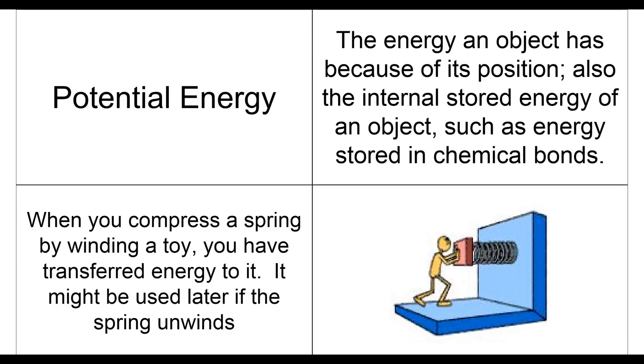Now, our next word is going to be potential energy. So I mentioned there's two ways in which we can categorize energy, and so we just mentioned kinetic, and the next one's going to be potential. Now, potential energy is the energy an object has because of its position. Also, the internal stored energy of an object, such as energy stored in chemical bonds.